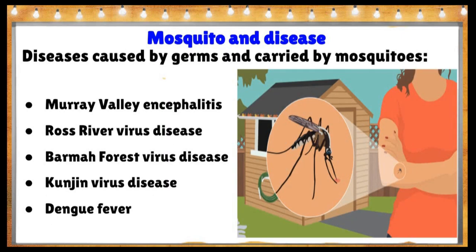Diseases caused by germs carried by mosquitoes include Murray Valley encephalitis, Ross River virus disease, Barmah Forest virus disease, Kunjin virus disease, and dengue fever. The mosquitoes likely to carry these viruses breed in open, shallow, and poorly maintained sewage lagoons and in water-holding containers including rubbish left lying around people's yards.